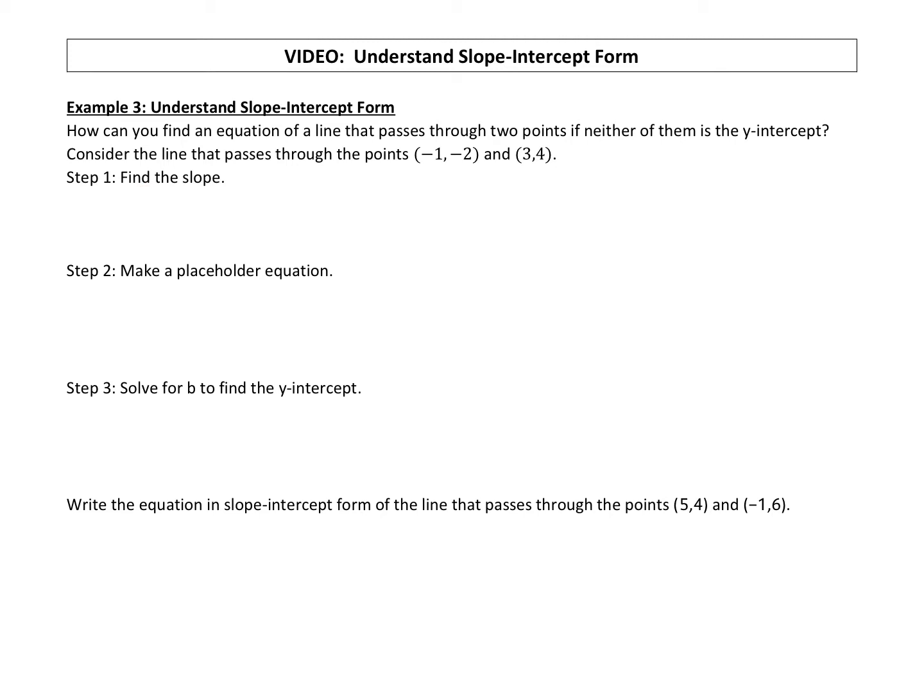When you're given two points, we did this in the last problem, we can find the slope using our slope formula. So here's our x1, y1. Here's our x2, y2. Just a reminder, slope formula is y2 minus y1 over x2 minus x1. And then we just plug in those points.